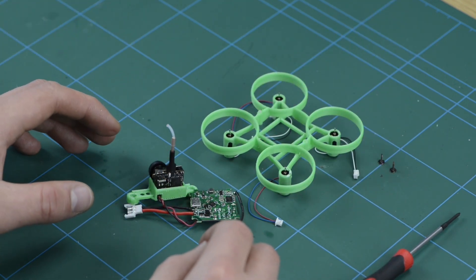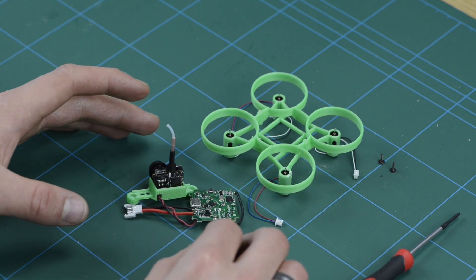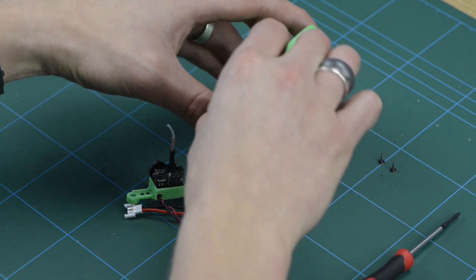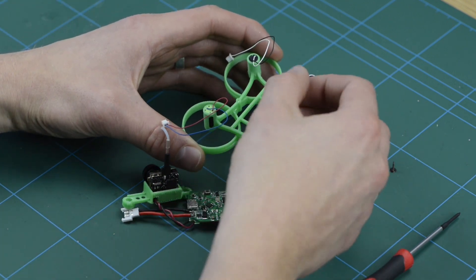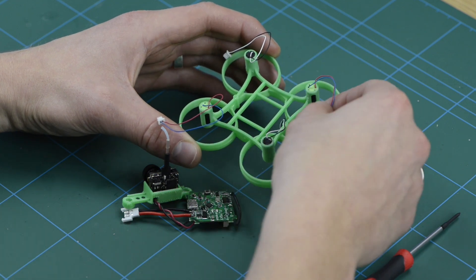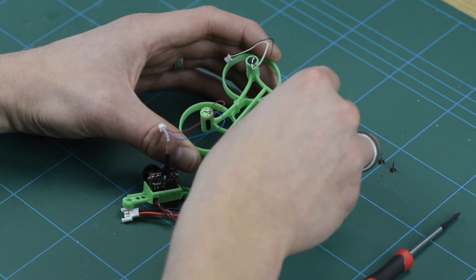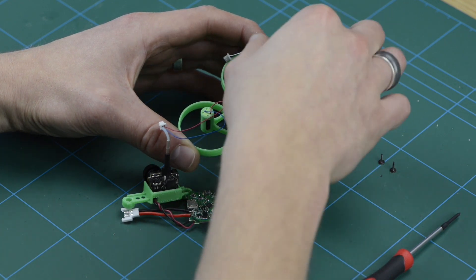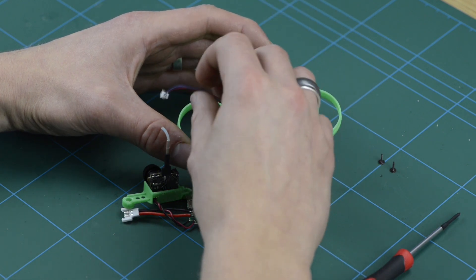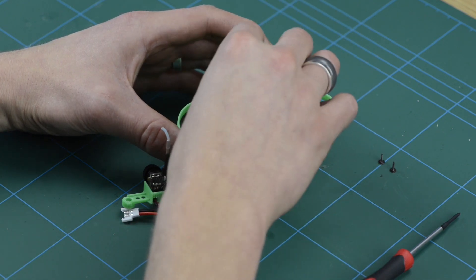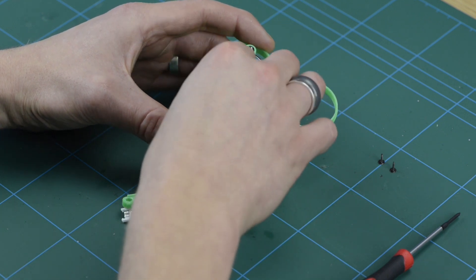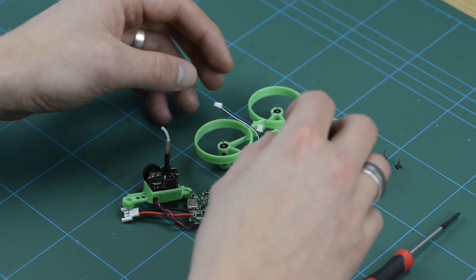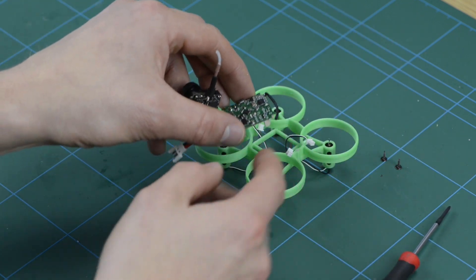And before we fit it, we need to connect the motors because once the flight controller is fitted down against the chassis, we won't be able to get to the motor ports. So what I'm going to do is turn that over and firstly feed the motor wires through and then turn that back.